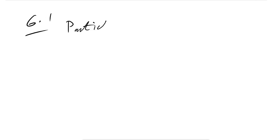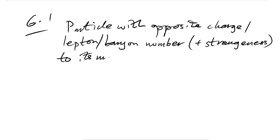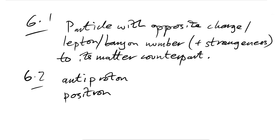Question 6.1: An antiparticle has opposite charge, lepton number, baryon number, and strangeness to its matter counterpart. Question 6.2: The antiparticle of a proton is an antiproton. The antiparticle of an electron is not called an anti-electron — it's called a positron.